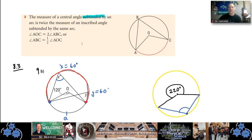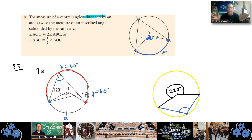I want to highlight the word 'subtended.' The measure of a central angle — an angle made by two radii and the center — subtended by an arc is twice the measure of an inscribed angle subtending the same arc. An arc is a part of the outer edge of the circle. An inscribed angle is an angle whose vertex is on the edge of the circle. So the central angle is always twice the inscribed angle that subtends the same arc.